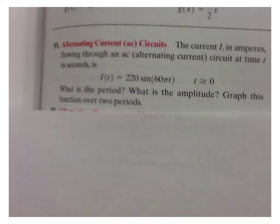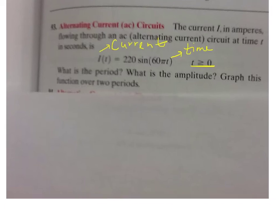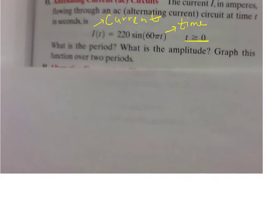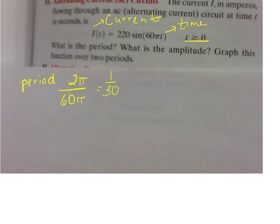Now let's look at problem 93 — a word problem about alternating current in a circuit. With word problems like this, just figure out what everything stands for. Here i is the current, t is time (positive only). They want the period, the amplitude, and a graph. The period is 2pi divided by 60pi, which simplifies to 1/30.